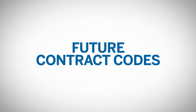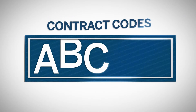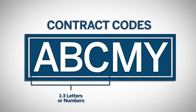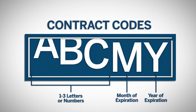The display format of futures contract codes is fundamental to understanding pricing across multiple expirations. Contract display codes are typically one- to three-letter codes identifying the product, followed by additional characters indicating month and year of expiration. The format of a contract code varies according to asset class and trading platform.